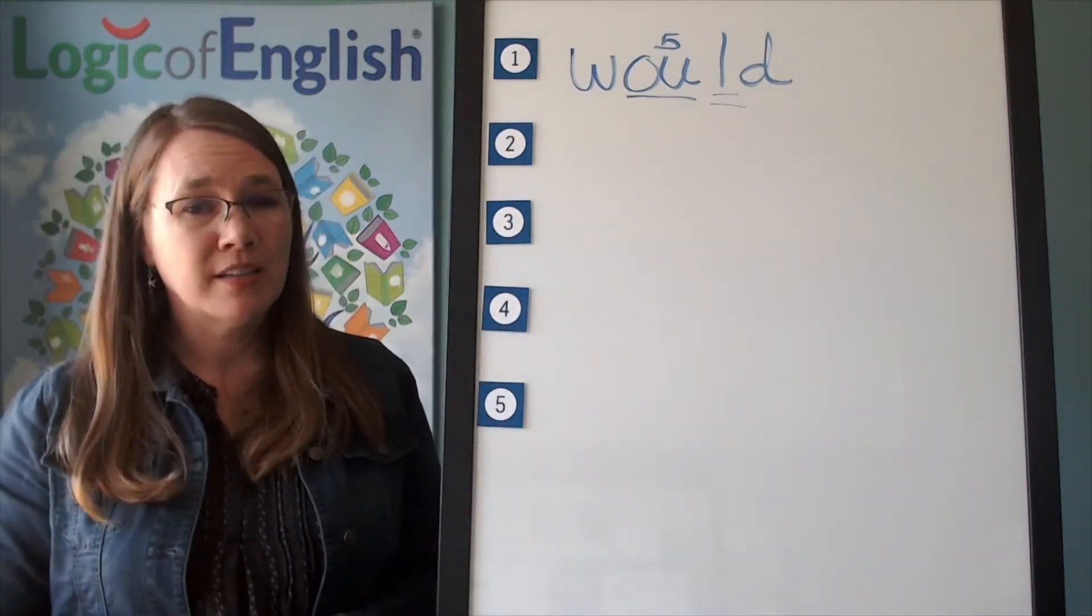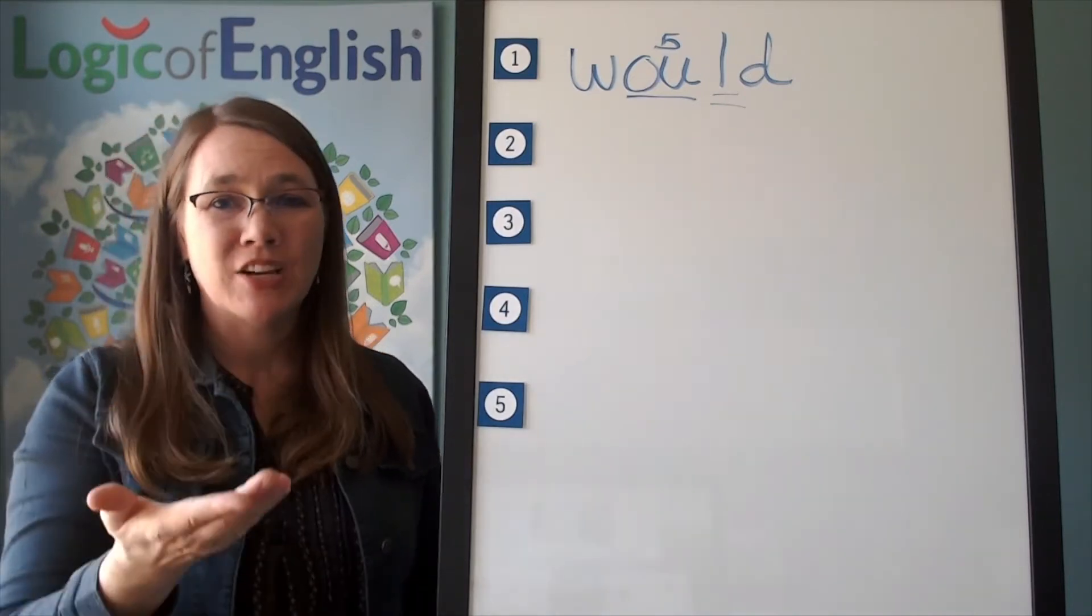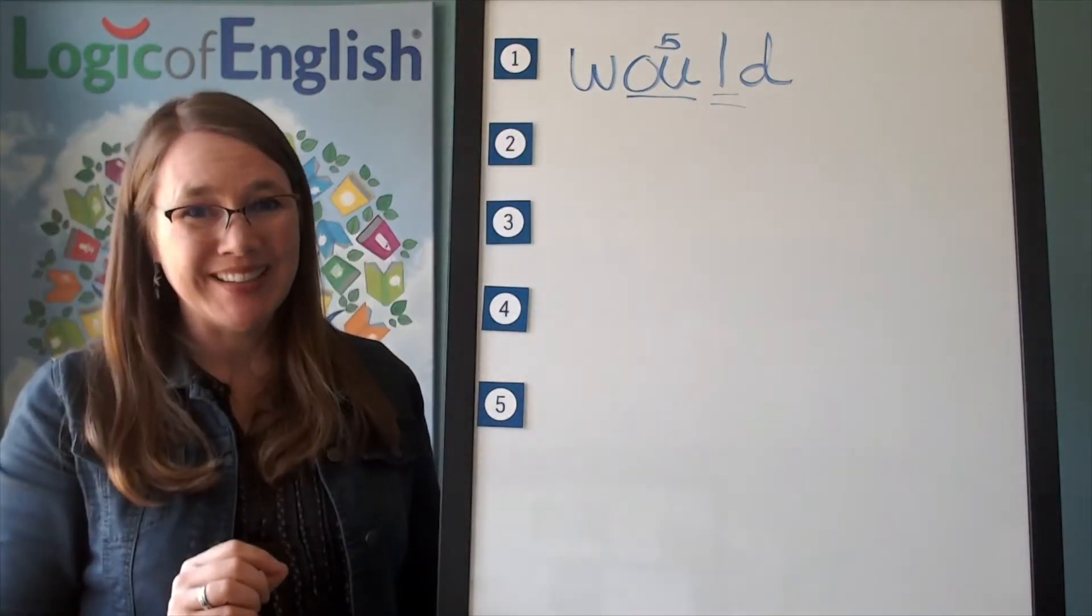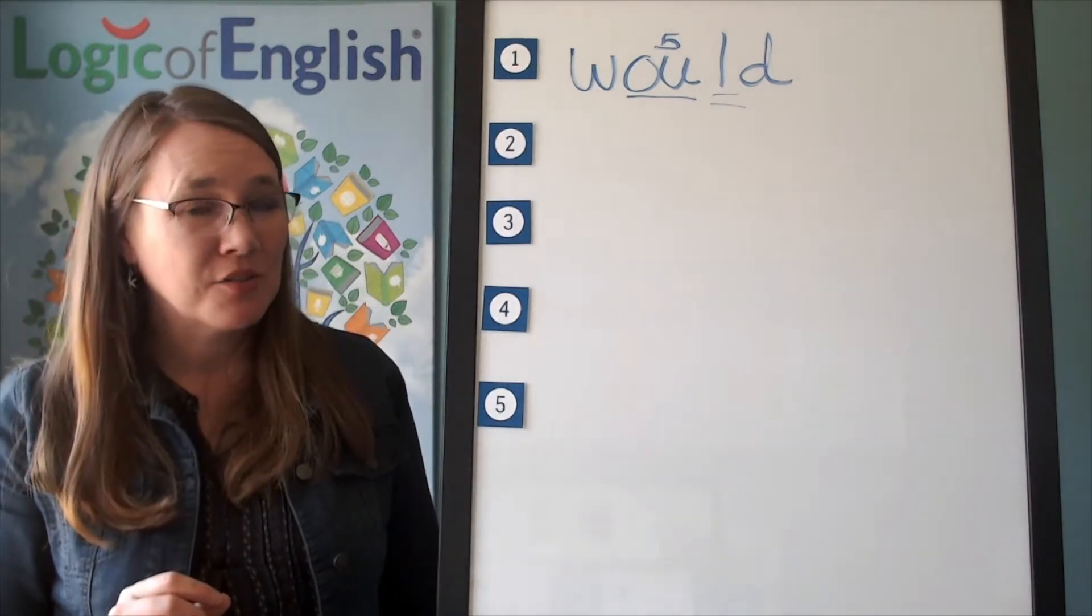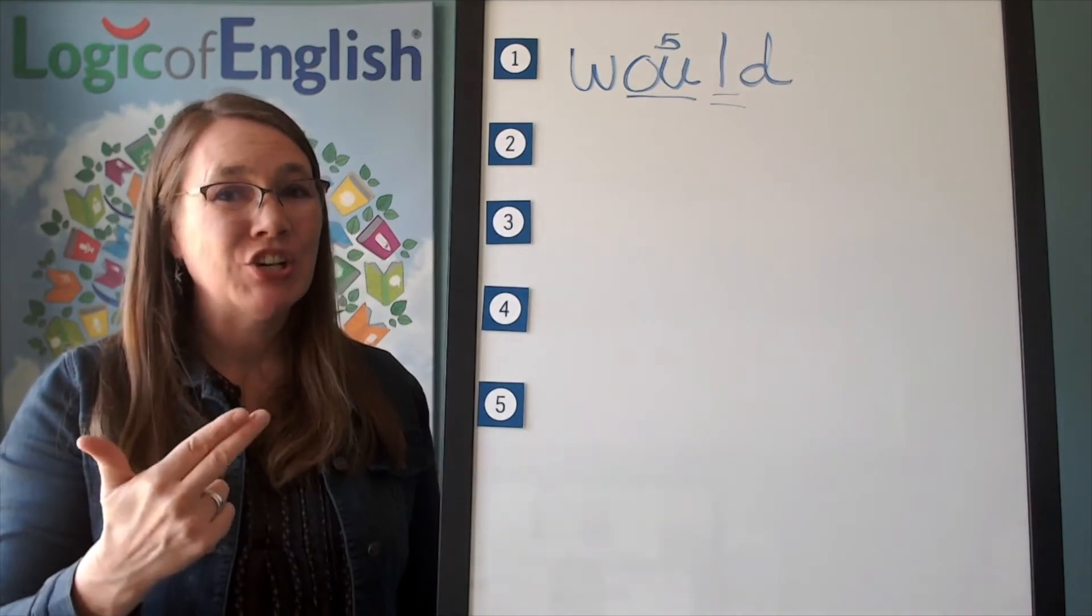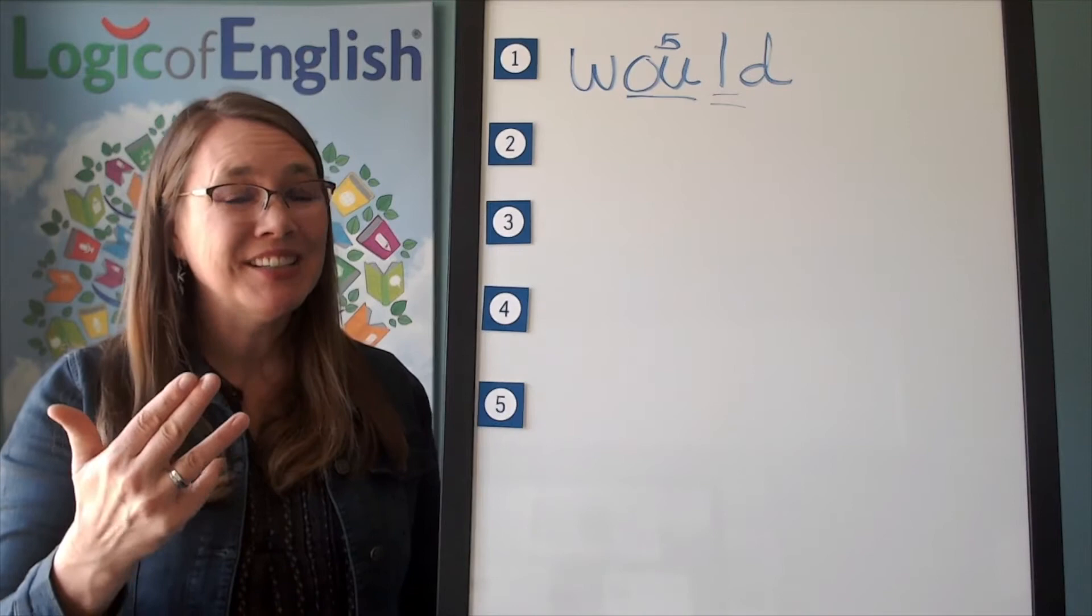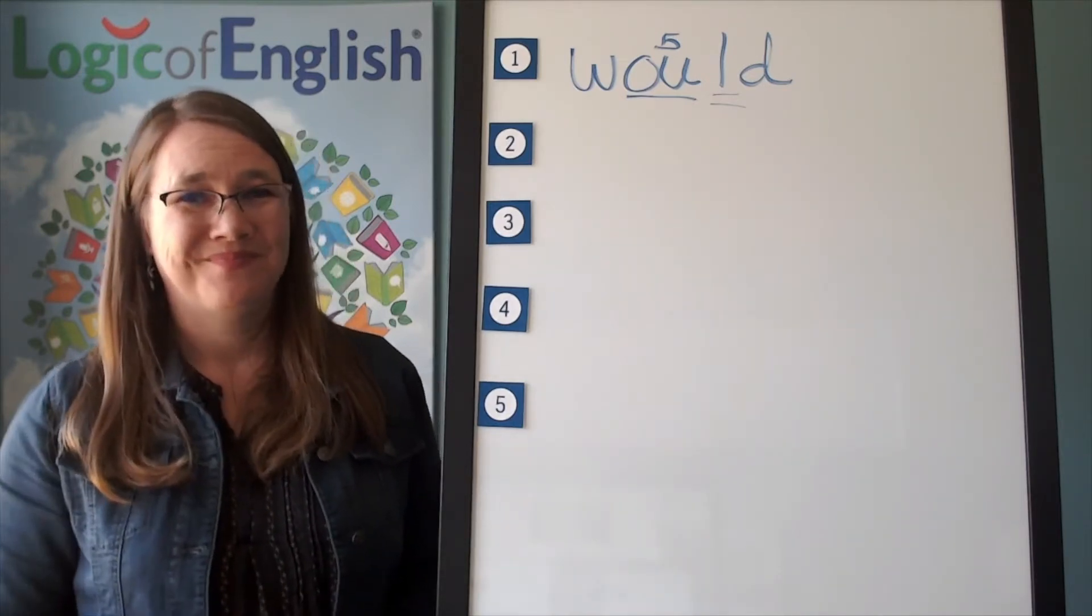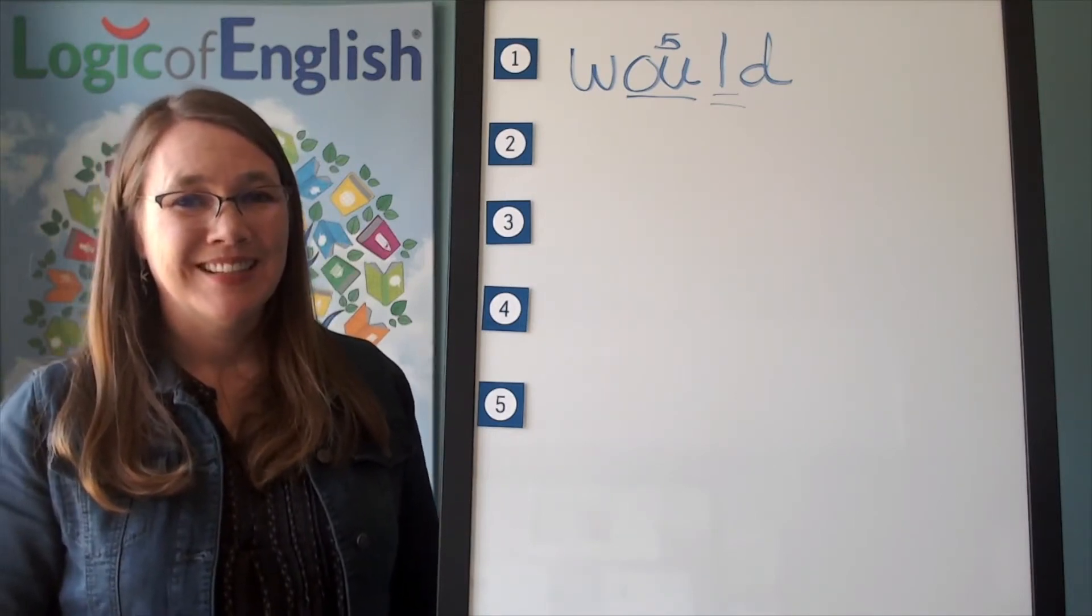The next word is could. Could you help me? Could. Go ahead and say could. Do you hear something similar between would and could? I think you might be able to make some guesses about how this will be spelled, but let's sound it out together. Kuh. This is a kuh, s. Uh. Ow, o, oo, uh, uh. Silent L. Duh. Go ahead and write could.